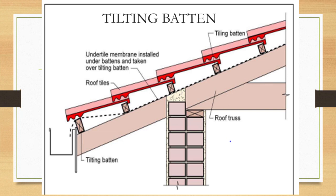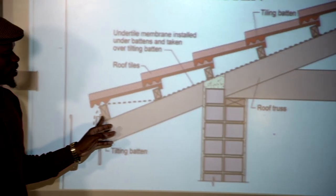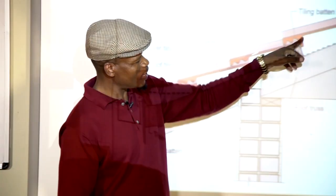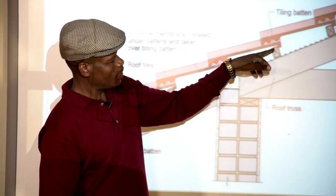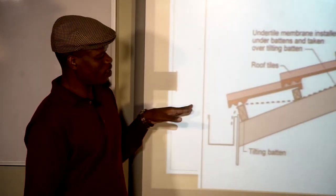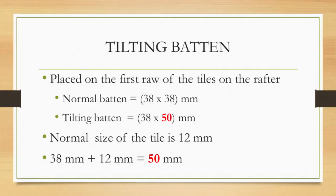The tilting button is a slightly bigger button. All other buttons have the same size, but since tiles sitting on the button add the tile thickness to the height — and at the eave end there is no tile beyond that point — a slightly longer material called the tilting button is needed. To calculate the tilting button size: take the normal button size of 38 by 38, add the tile thickness of 12 mm, and you get 50 mm. Therefore, the tilting button size is 38 by 50 mm.